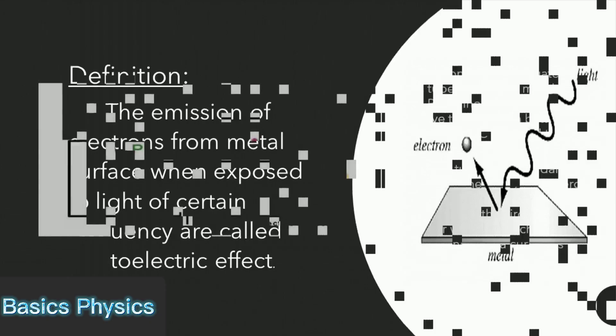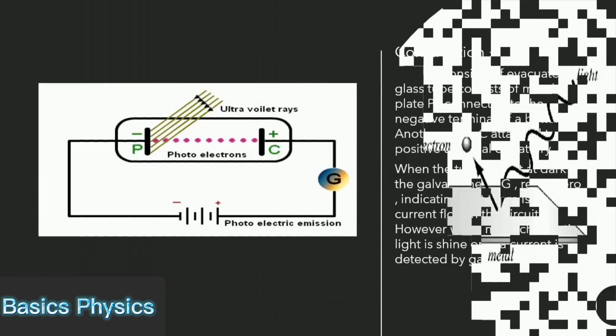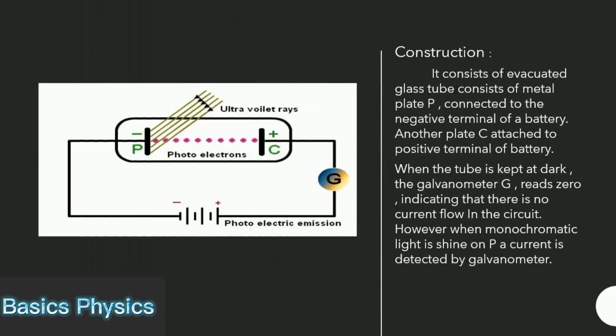It consists of evacuated glass tube with metal plate P connected to the negative terminal of a battery. Another plate C is attached to positive terminal of battery. When the tube is kept in dark, the galvanometer G reads zero, indicating that there is no current flow in the circuit. However, when monochromatic light shines on P, a current is detected by galvanometer. It means current flows in the circuit.